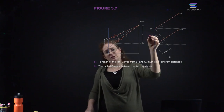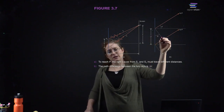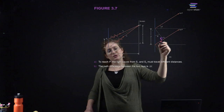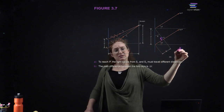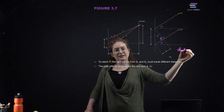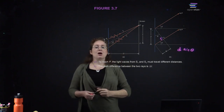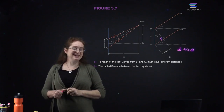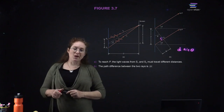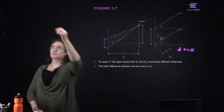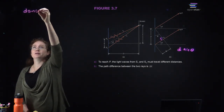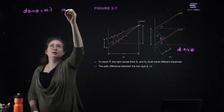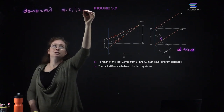We will get maxima every time d sine theta equals an integer number of wavelengths: d sine theta equals m lambda, where m equals 0, 1, 2, and so on.